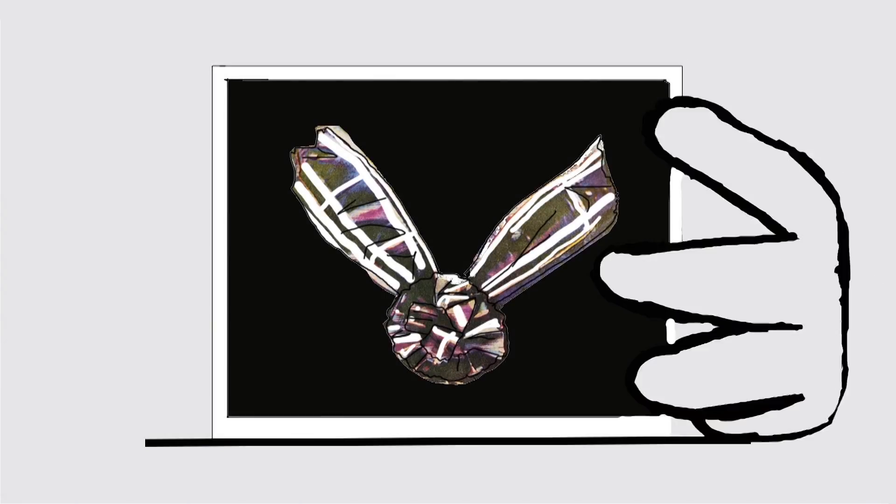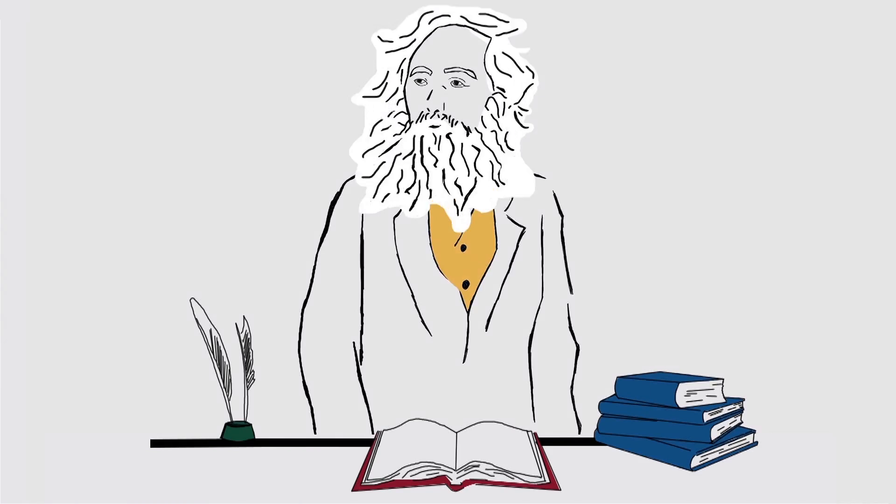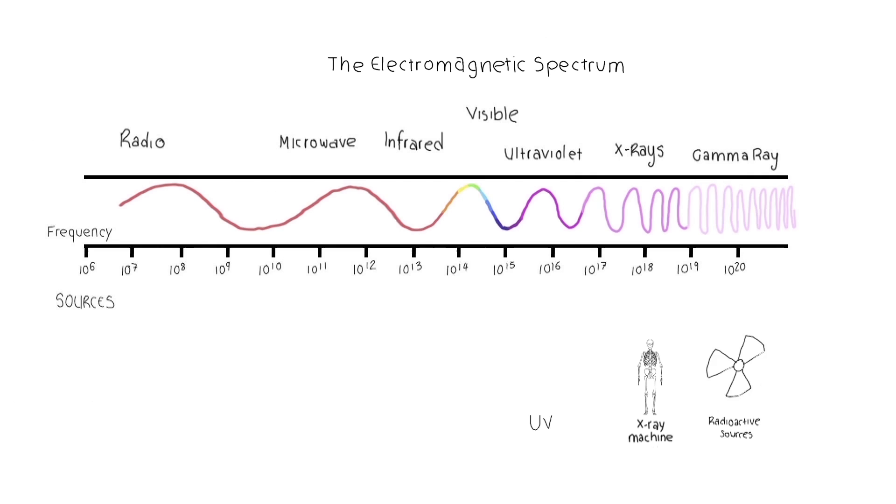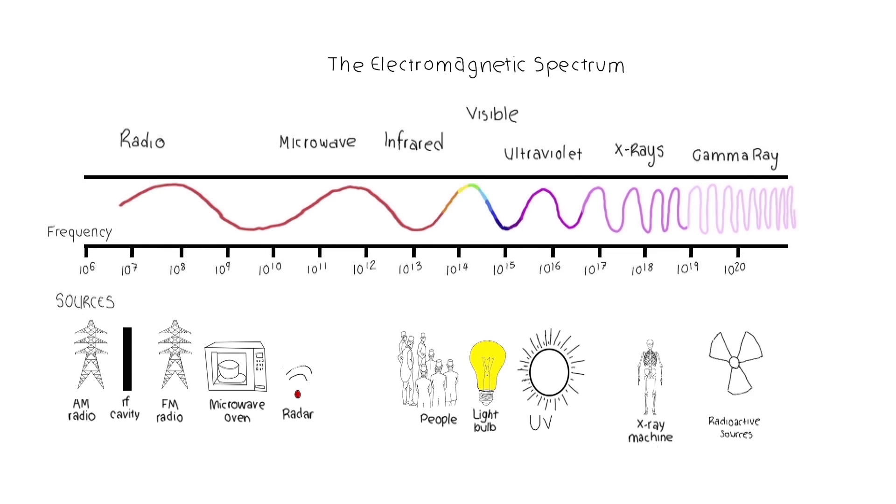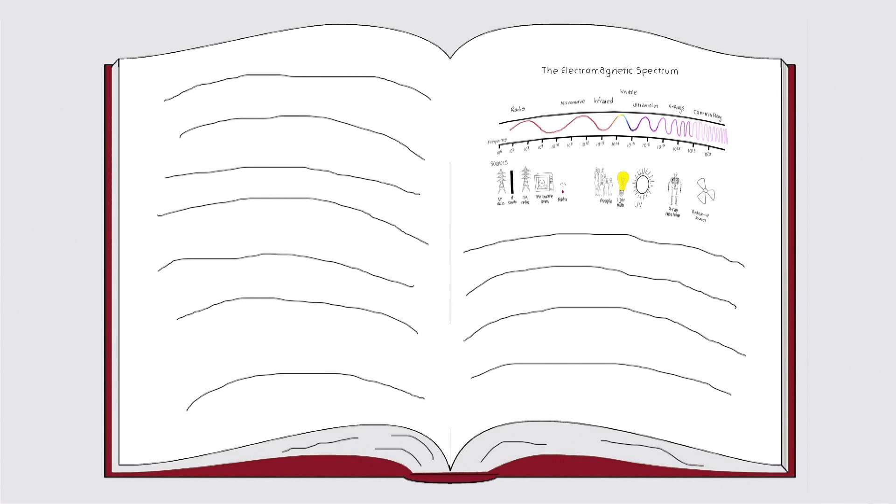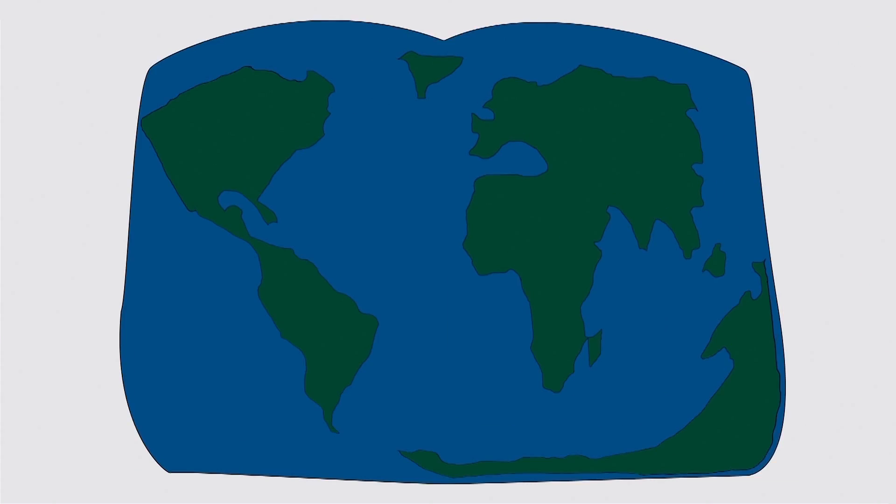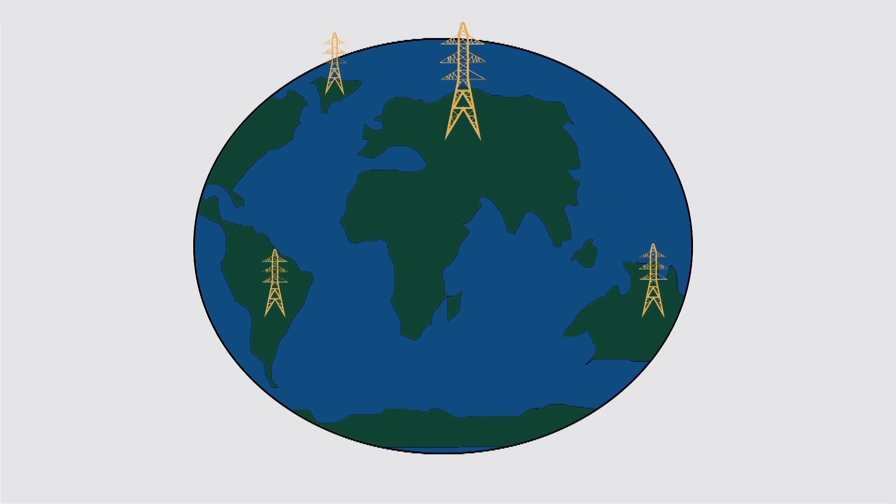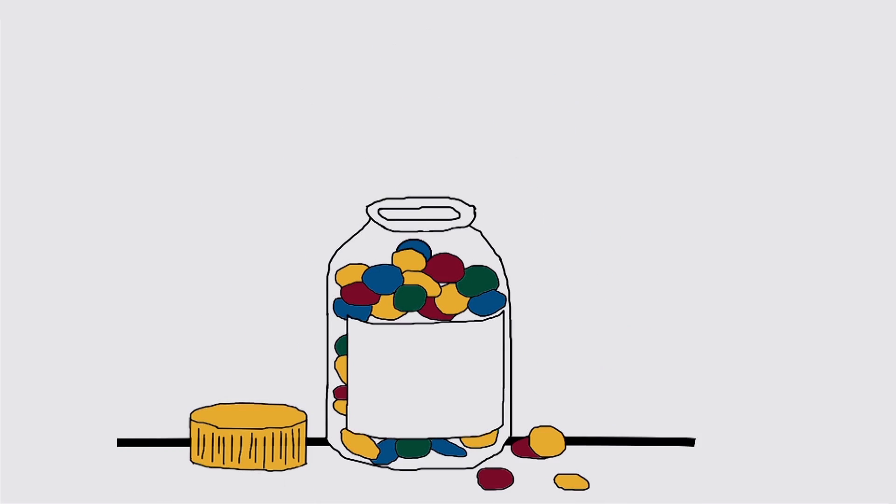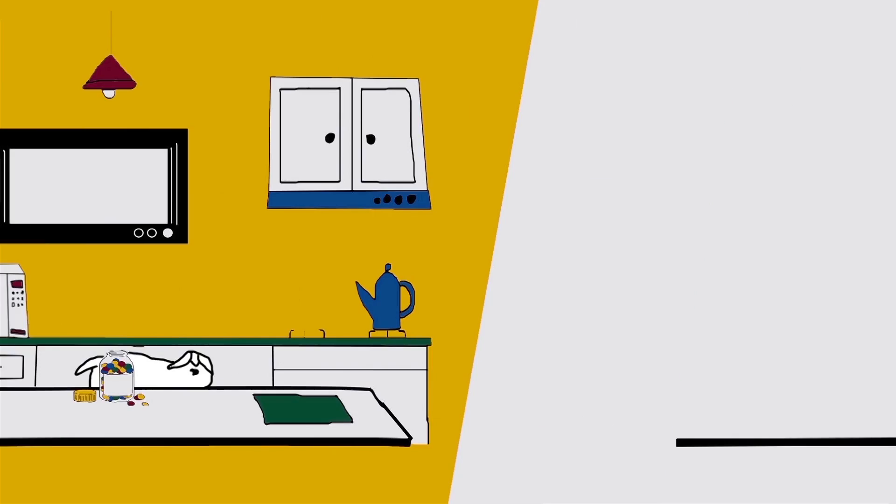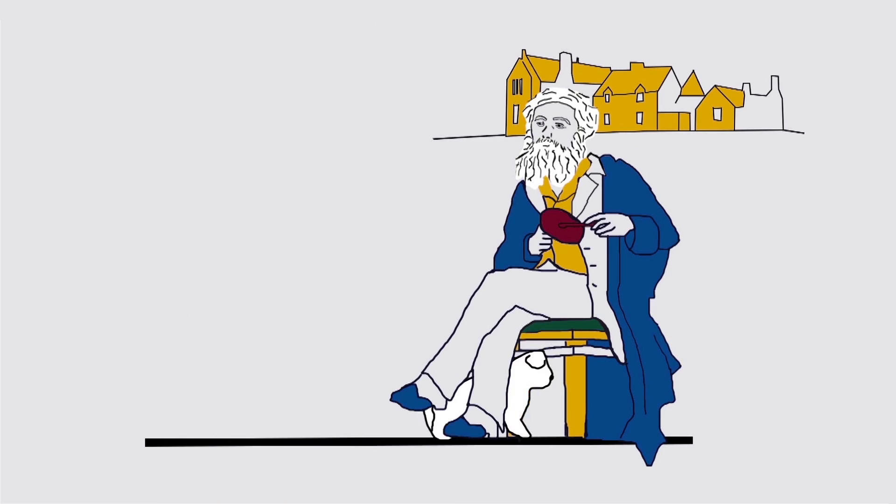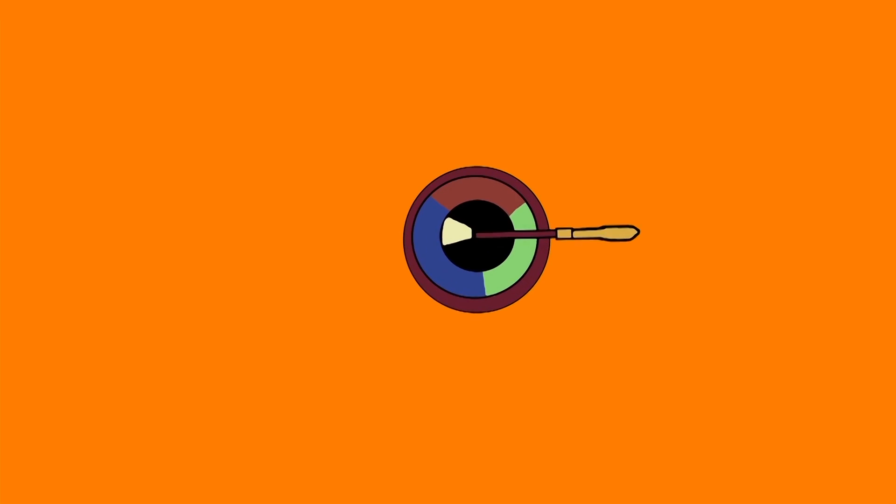Maxwell died in 1879, 48 years old. He described the existence of the vast electromagnetic spectrum years before it could be detected. Not only do we live in a world in which our communication, medicine and modern appliances depend on our understanding of the electromagnetic spectrum, but Maxwell's way of thinking about light was a very modern one.